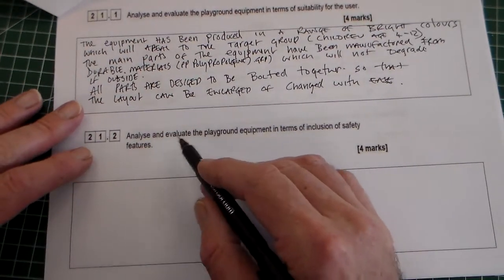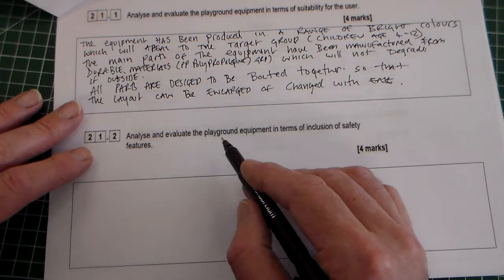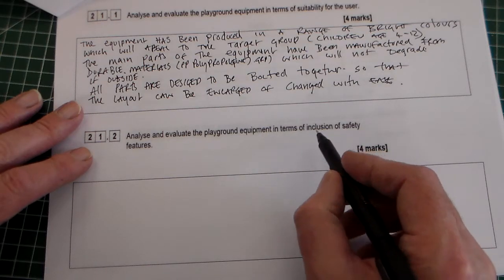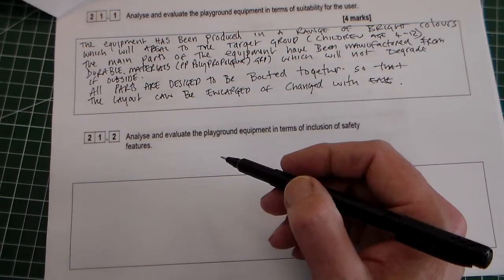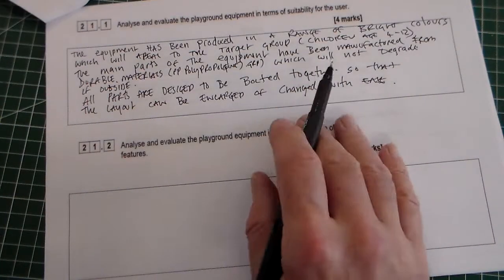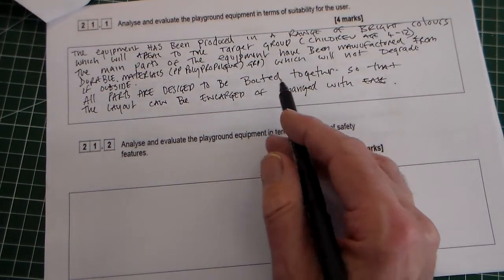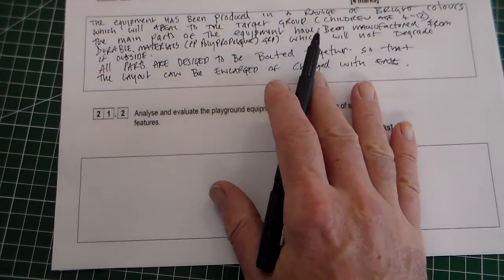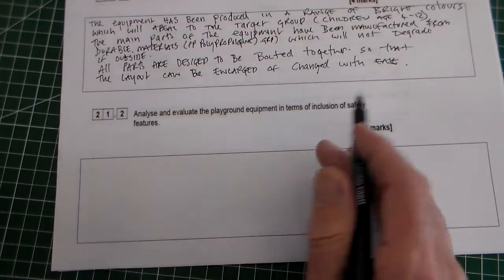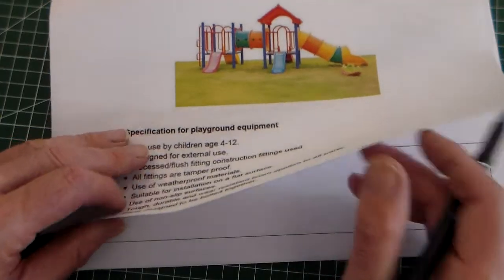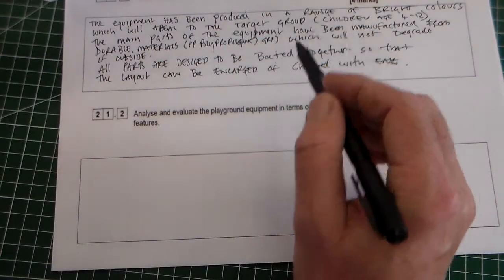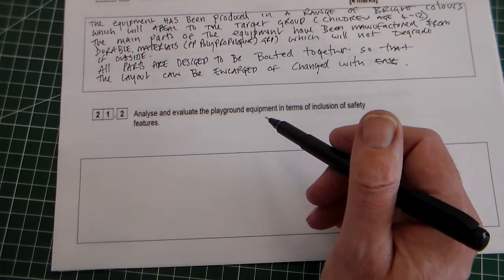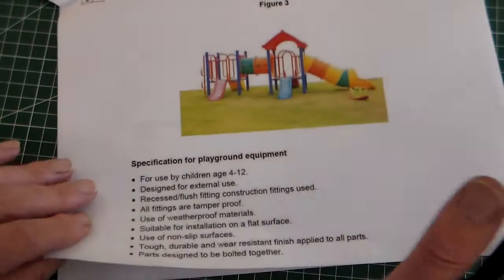Question two is broadly similar but it says analyze and evaluate the playground equipment in terms of the inclusion of safety features. So what can we say about safety features? It might have been useful to read that because you might have added a safety feature in here, because of course a safety feature could be a feature that would be suitable for the user. So let's look at safety features here.